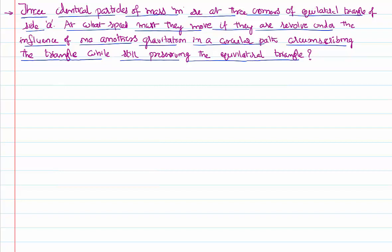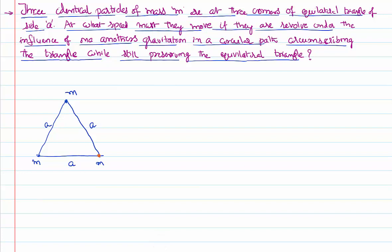Let us try analyzing. There is an equilateral triangle, and at each corner of the equilateral triangle there is a mass m. The side of this equilateral triangle is a. On each particle there will be a gravitational force of attraction. If I consider one particle, the other two particles will each apply a gravitational force on it, because gravitational force exists between every two masses and is always attractive.